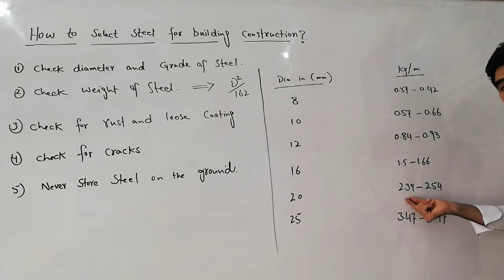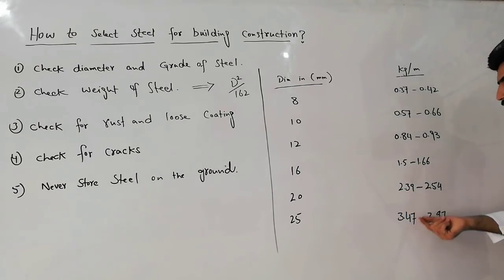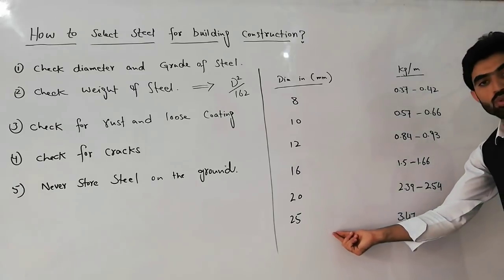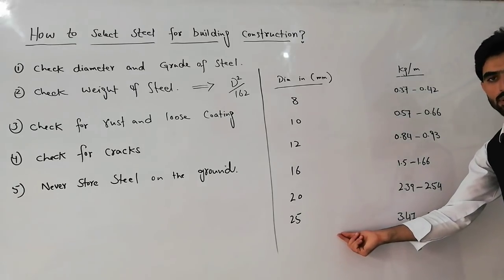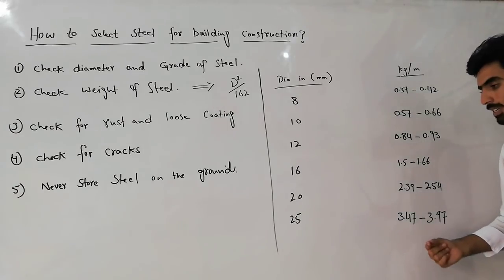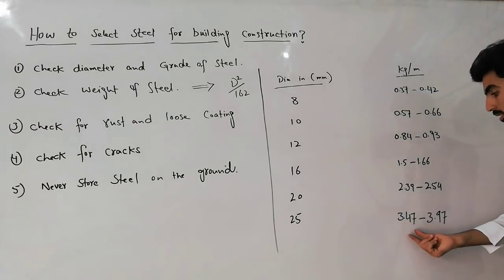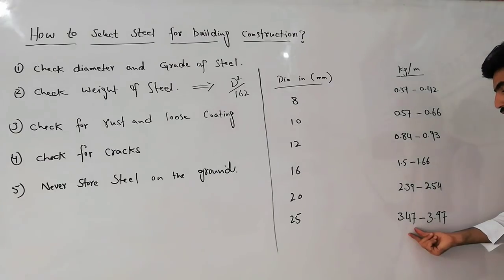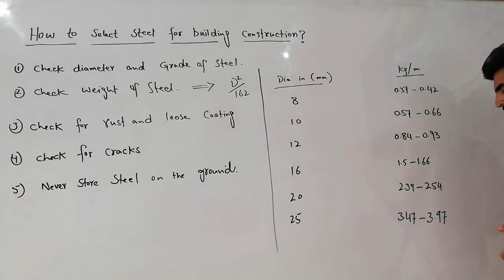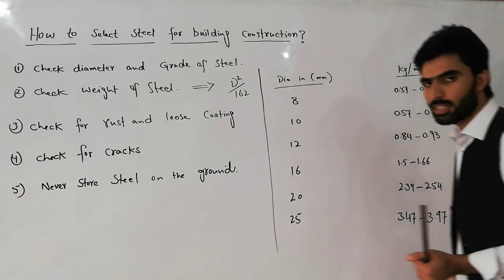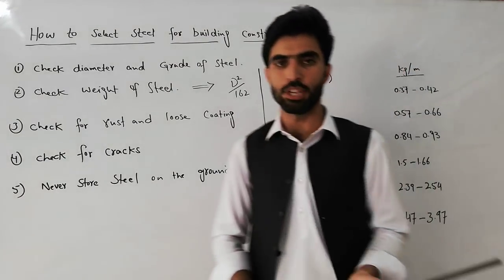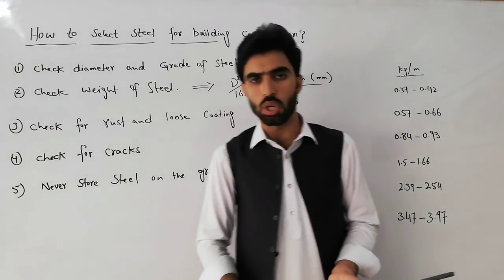For 20 mm diameter steel, the weight should be 2.39 to 2.54 kg per meter. For 25 mm diameter steel, the weight should be 3.47 to 3.97 kg per meter. So make sure to check the weight, diameter, and grade of steel.